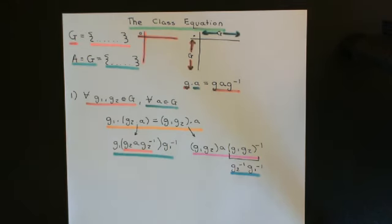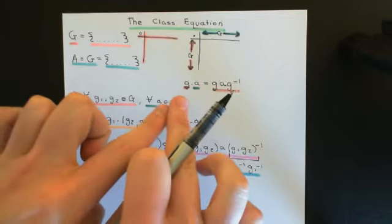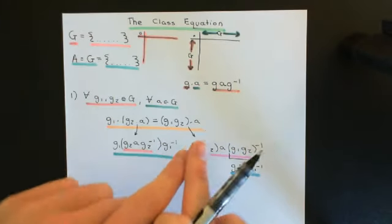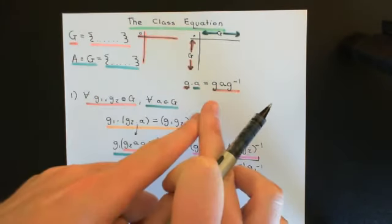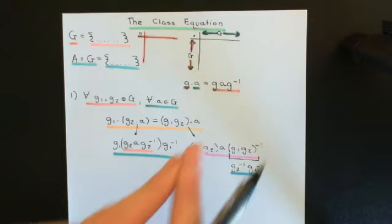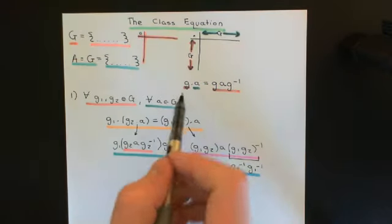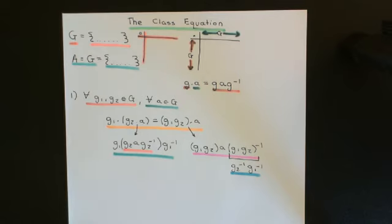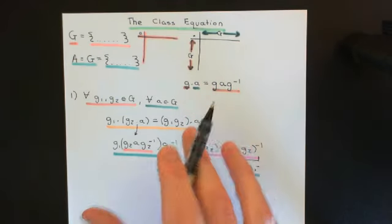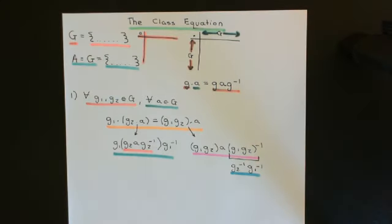These two things are absolutely equal for whatever little g1, whatever little g2, and whatever little a you pick from the group capital G. We've now proven that if we define this group action by capital G on capital G as conjugation of all elements by little g, it actually does obey axiom number one of a group action.